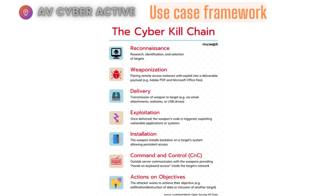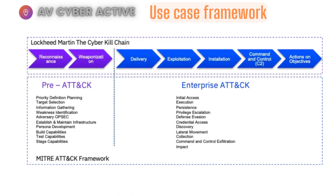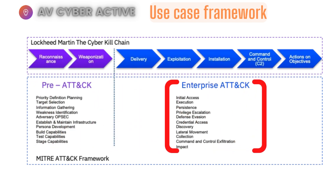The Lockheed Martin Cyber Kill Chain is something you'll hear people talk about all the time. If I divide it into two parts, that would be the pre-attack and the enterprise attack. In the pre-attack stages, it's all confined to your perimeter or boundary firewall — the attacker is only doing reconnaissance to gather information and equipping itself with proper tools, which is weaponization, developing scripts to leverage loopholes found during recon. In the enterprise attack stage, the attacker delivers the payload, exploits the system, installs on the system, maintains persistence by establishing connectivity to command and control, and then achieves its objective — whether cyber espionage or financial damage.